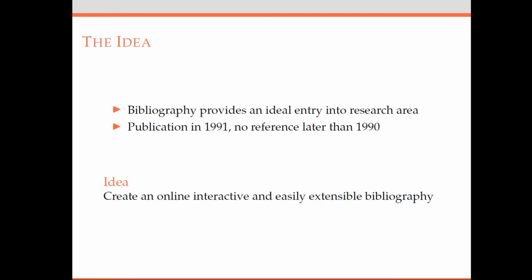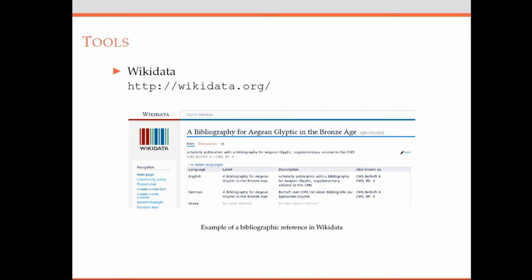So why not try to create an online version that is interactive and also easily extensible? I did some research and found Wikidata. It's a database for structured information with the same concept as Wikipedia — everybody can contribute, change, or correct things, so you get the collective knowledge of the community. What you see here is an example of how a bibliography entry looks in Wikidata: you have labels in multiple languages, you can input the author, topics, and so on.